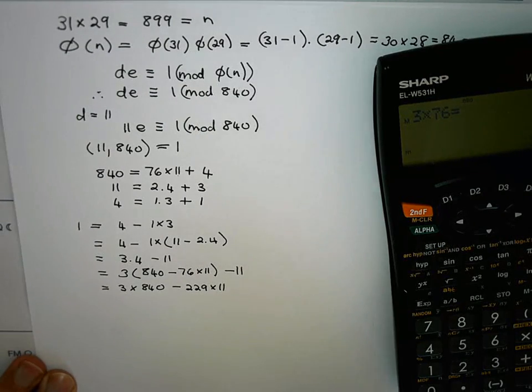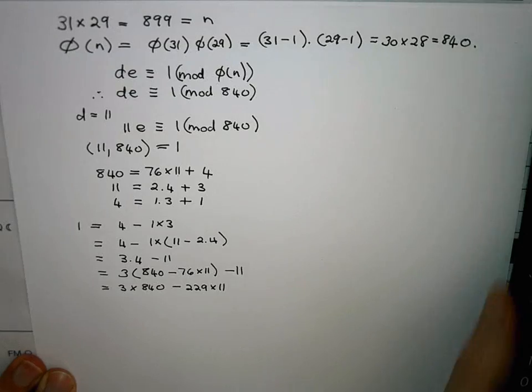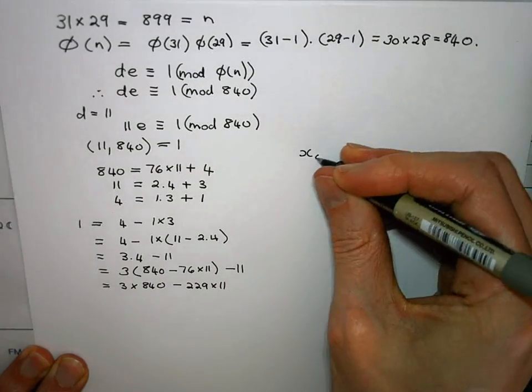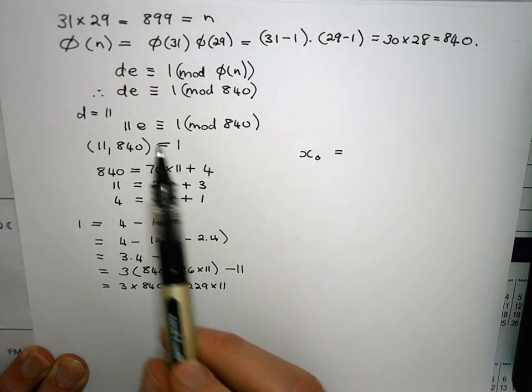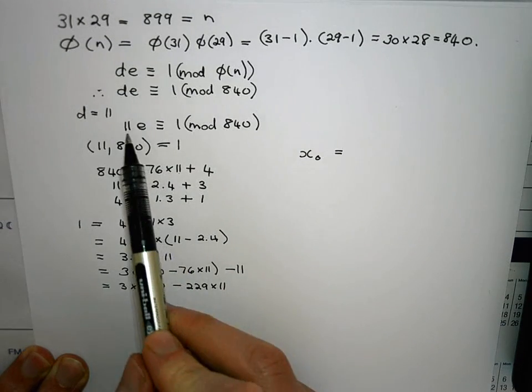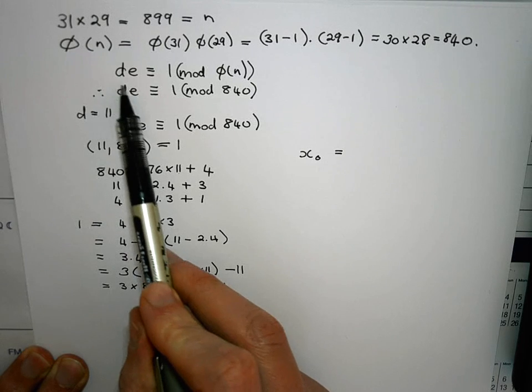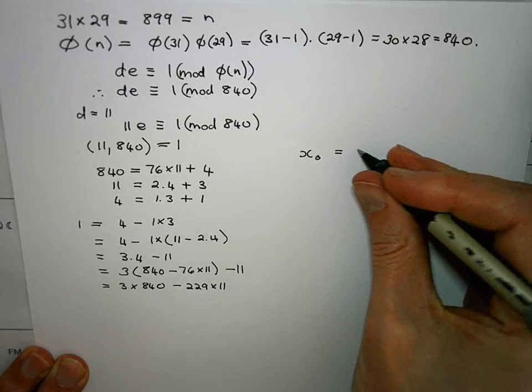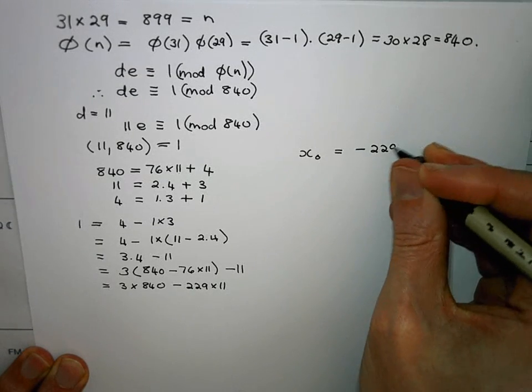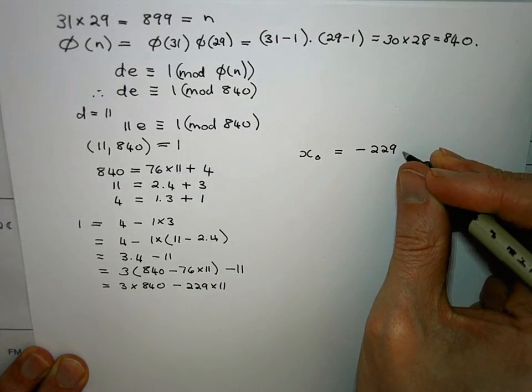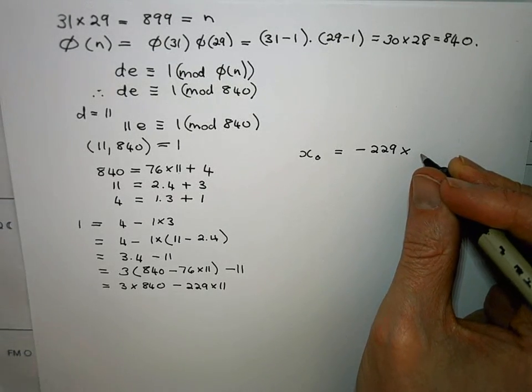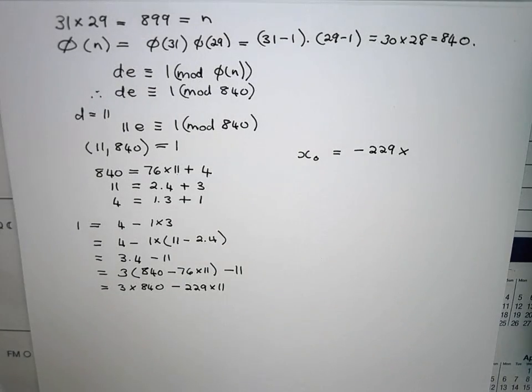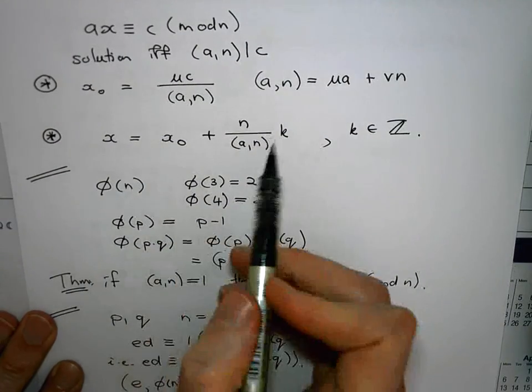All right now I'm in a position to go and solve this congruence over here. So my x₀, well I need the coefficient of my d what would usually be a in your linear congruence. So the coefficient here is minus 229.